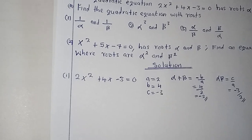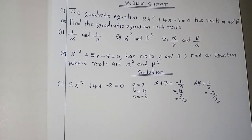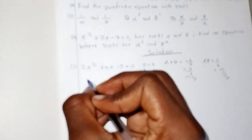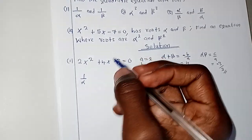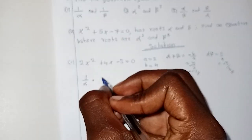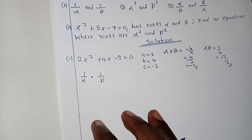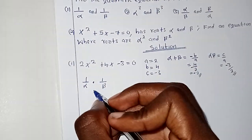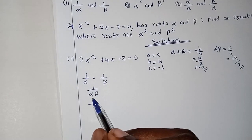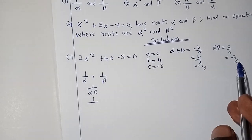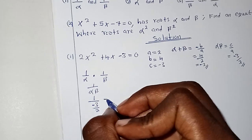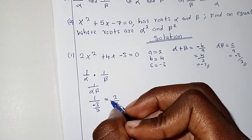Now we find the sum and product of the new roots. For the product: 1 over alpha multiplied by 1 over beta equals 1 over alpha-beta. Since the product of roots alpha-beta was negative 3 over 2, this gives us 1 over (negative 3/2), which equals negative 2 over 3.